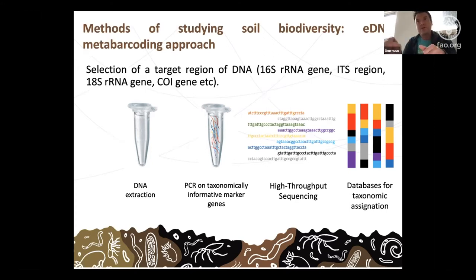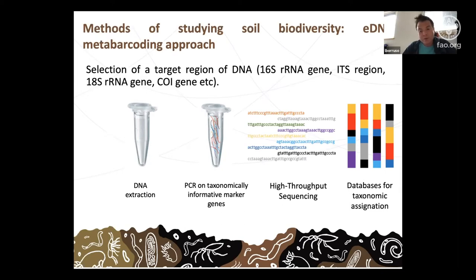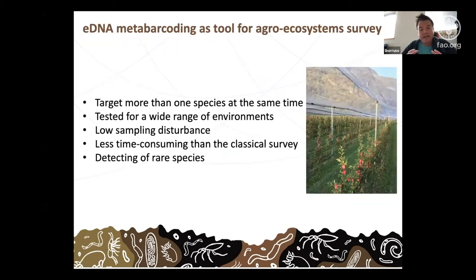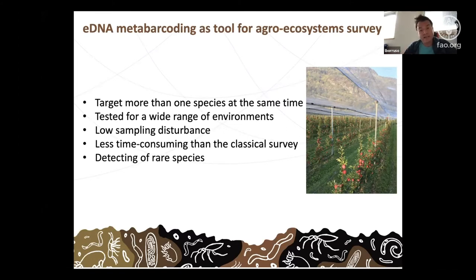From the same soil sample, you can analyze bacterial species, fungi, nematodes, arthropods, and other organisms. There is a correlation between genetic material found in the soil and the presence and abundance of specific organisms. The environmental DNA approach allows targeting more than one species with the same sample, and has already been used for soil, water, sediment, and even air environments.